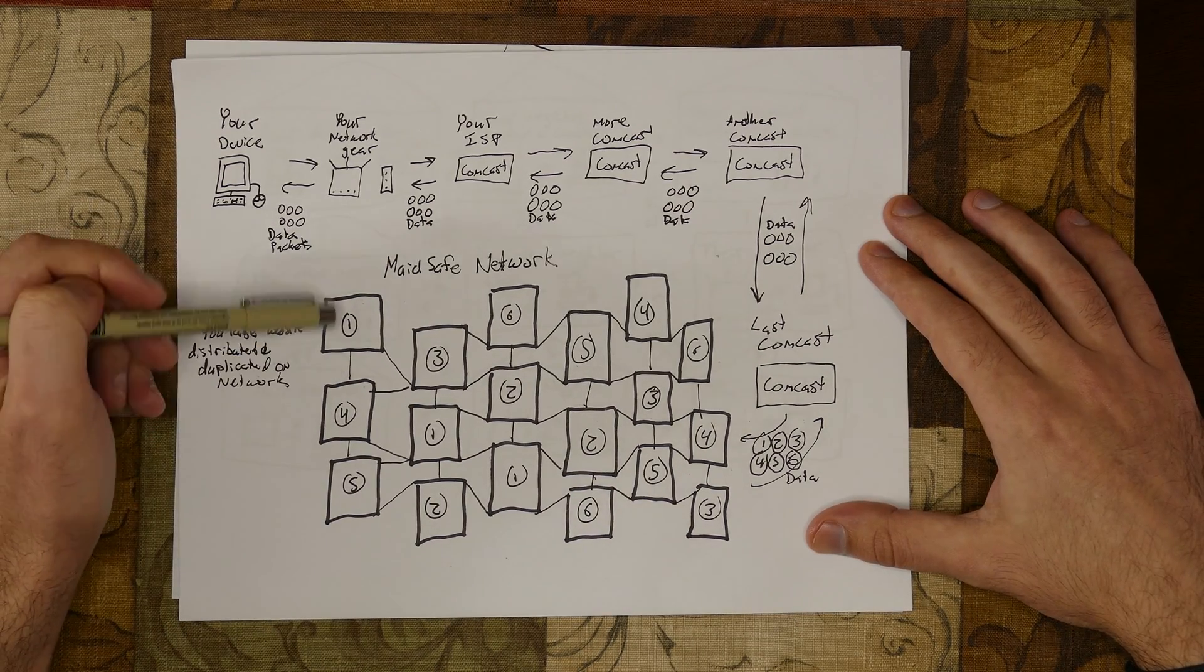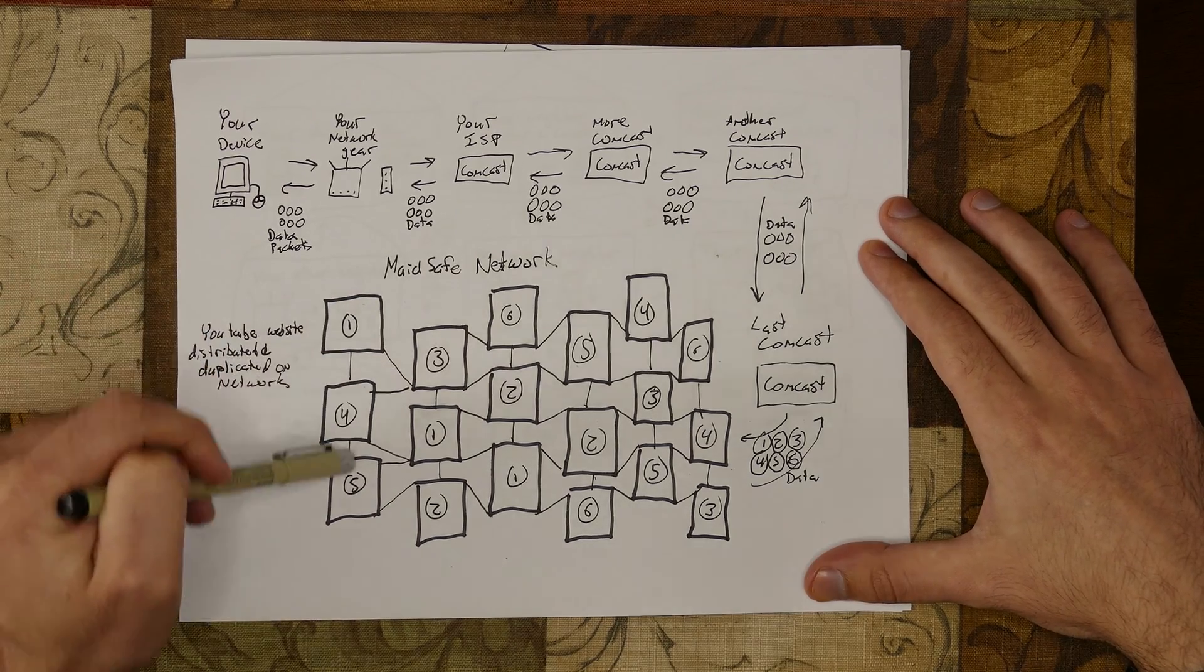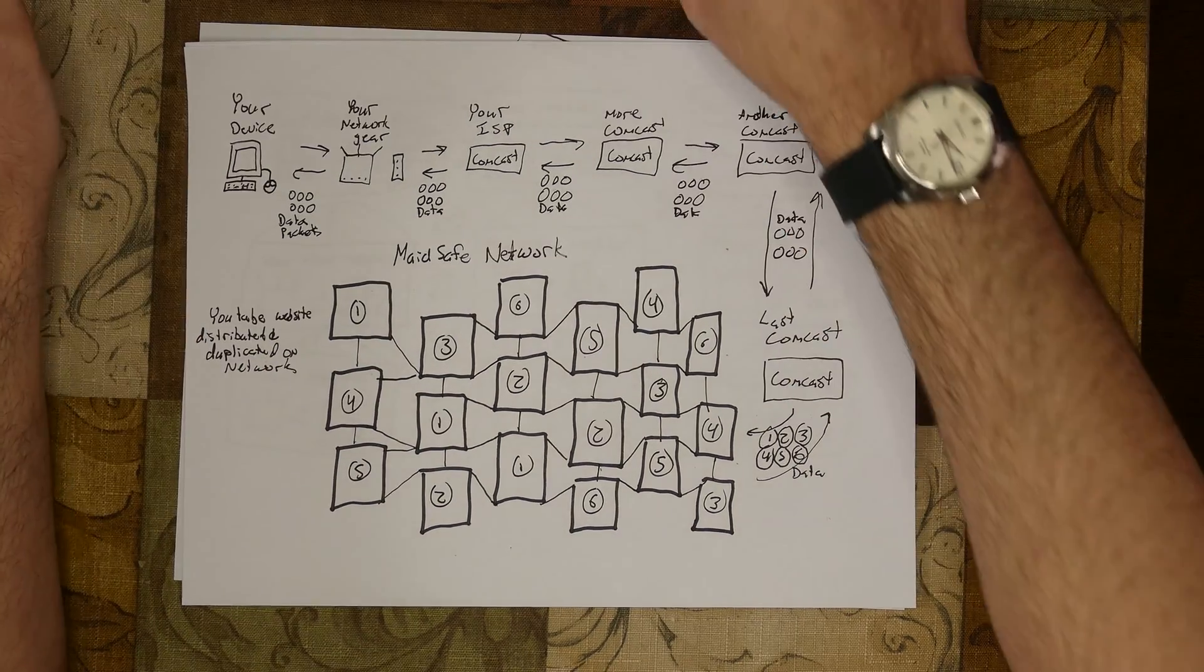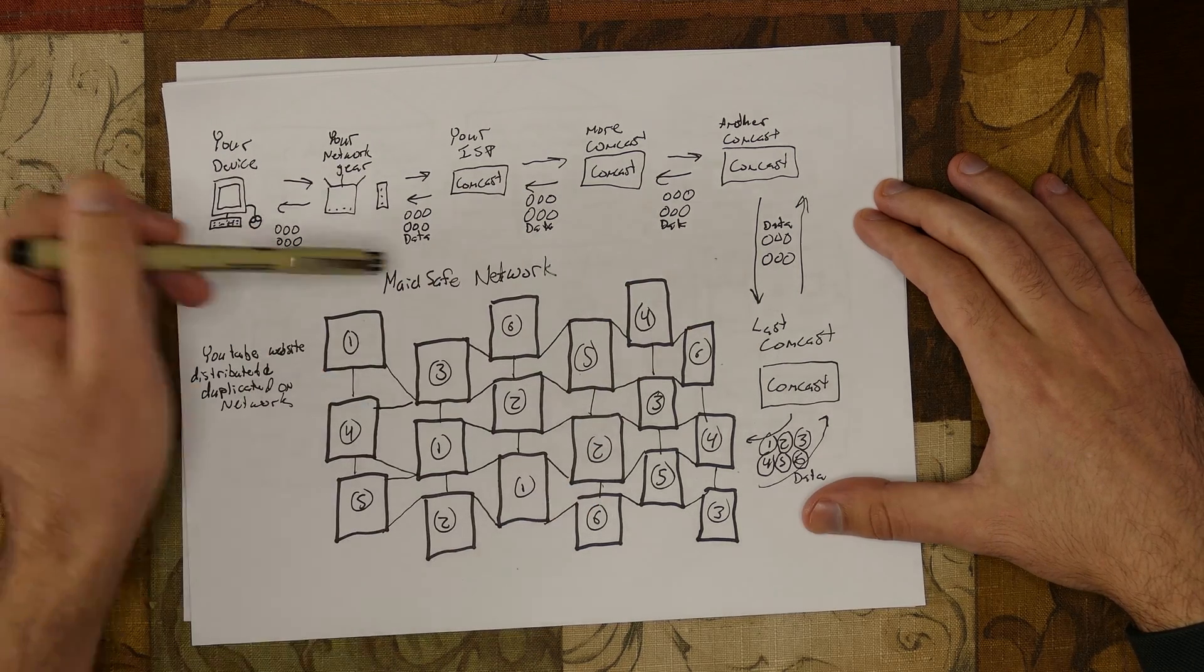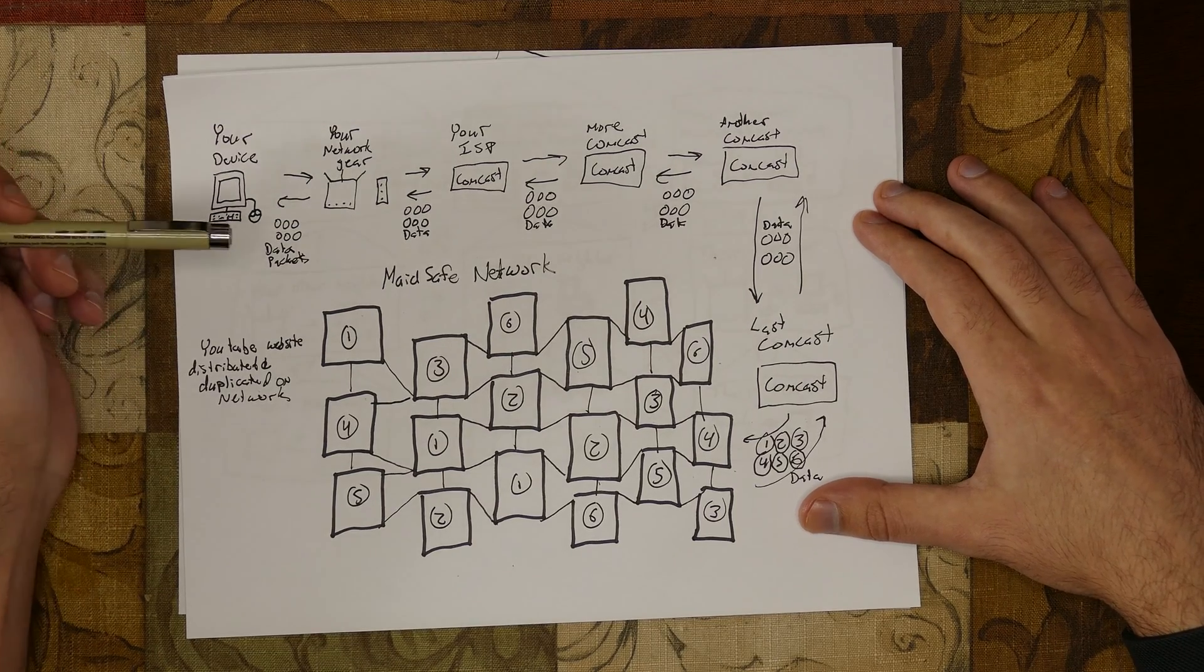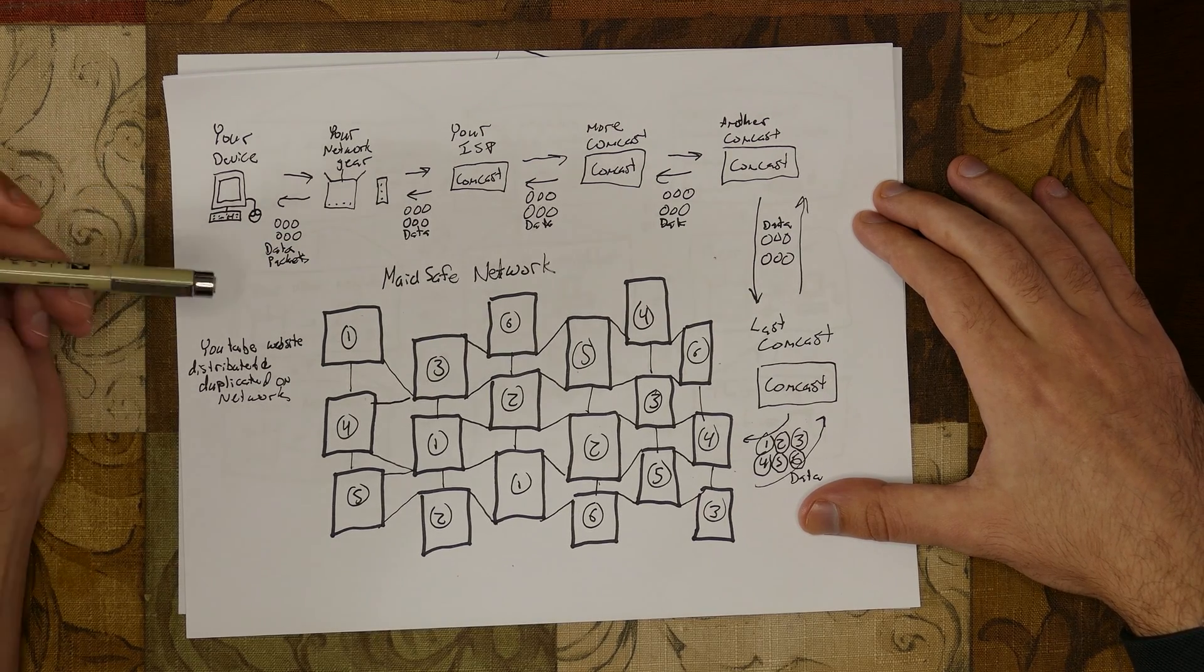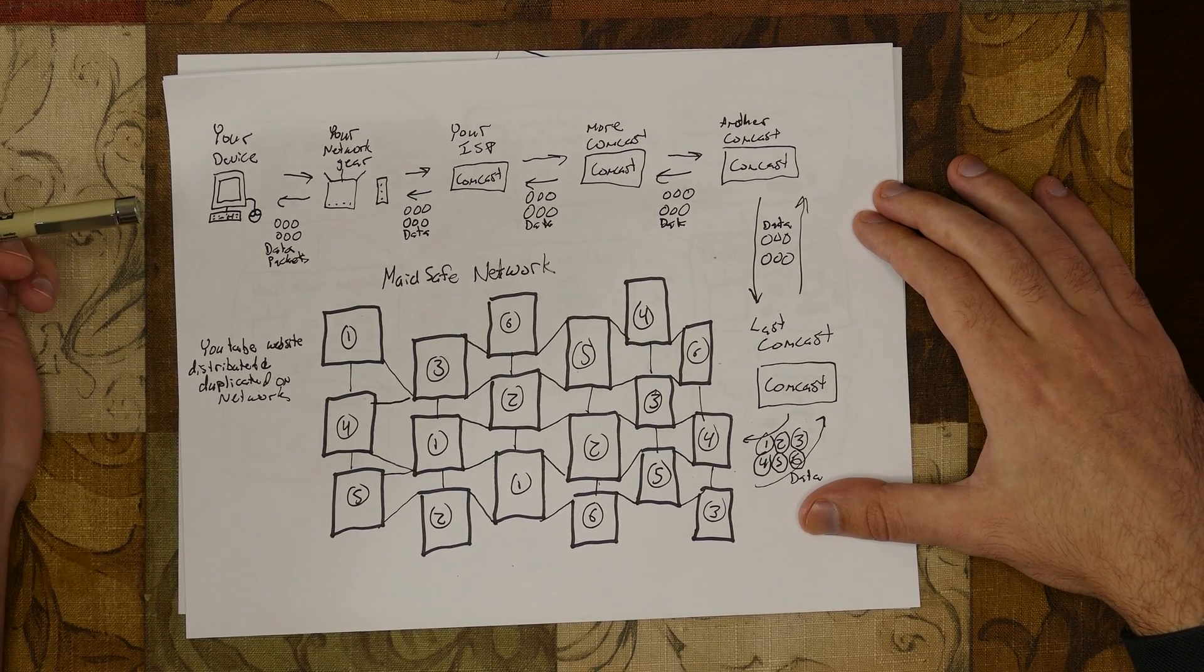When you access a website or service like YouTube on the Safe network, you're also accessing it from this whole peer-to-peer network of MadeSafe nodes. The website is split up and duplicated across all of these nodes. But as you can see, MadeSafe info still passes through your ISP, so they can still collect your encrypted MadeSafe data. I don't really agree with someone saying, well, your data is encrypted, so there's nothing to worry about, because if encryption was the answer, then why are we going through the trouble of creating MadeSafe when we can simply require full end-to-end encryption?